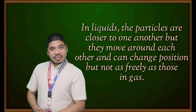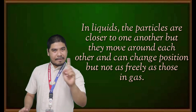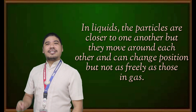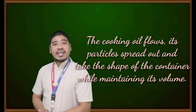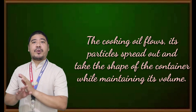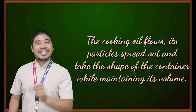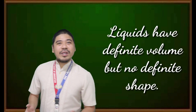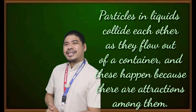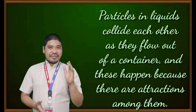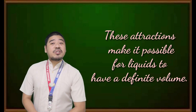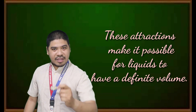In liquids, the particles are closer to one another, but they can move around each other and can change positions, but not as freely as those in gas. As you observe from the given example of liquid, like cooking oil, it flows. Its particles spread out and take the shape of the container while maintaining its volume. Thus, liquids have definite volume but no definite shape. Particles in liquids collide with each other as they flow out of a container, and this happens because there are attractions among them. These attractions make it possible for liquids to have a definite volume.